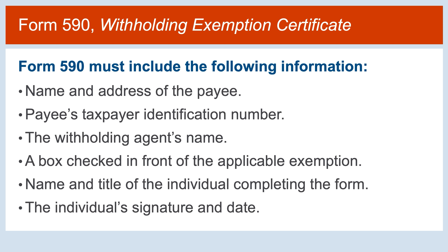For the Form 590 to be valid, it must include the name and address of the payee, the payee's taxpayer identification number, SOS file number, social security number, individual taxpayer identification number, California corporation number, or federal employer identification number, the withholding agent's name, a box checked in front of the applicable exemption, the name and title of the individual completing the form, as well as the individual signature and date. The withholding agent must retain a copy of this form and provide it to FTB upon request.